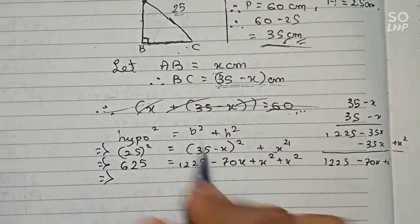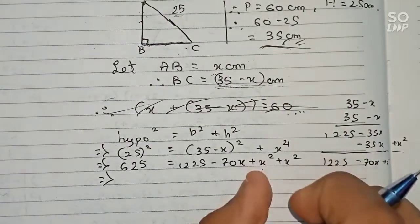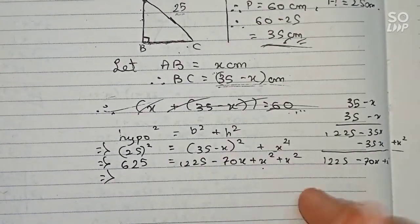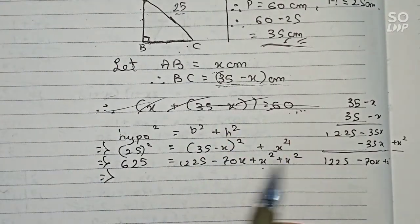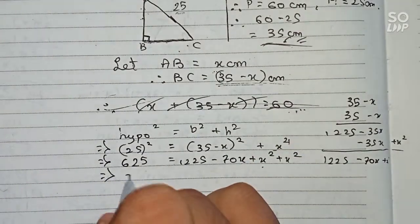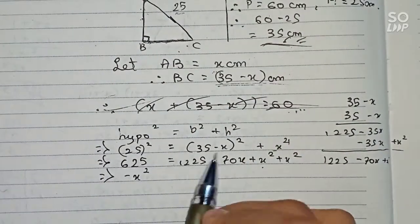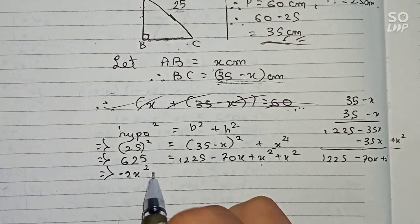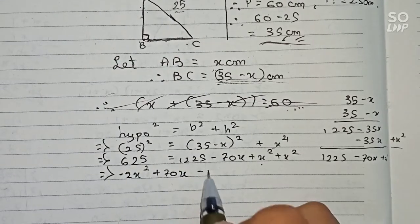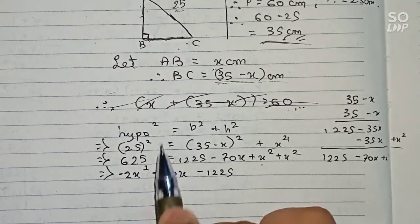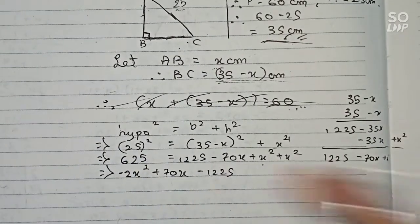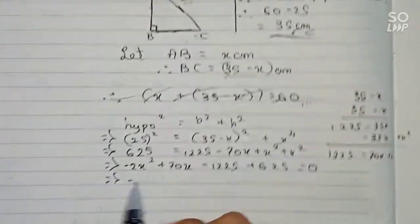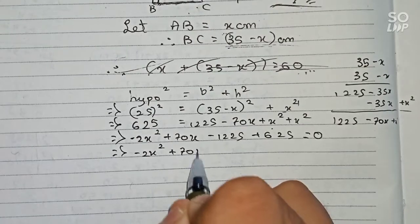Taking all terms to one side: x squared plus x squared gives 2x squared. Rearranging everything to one side, we get minus 2x squared plus 70x minus 1225 plus 625 equals 0, which simplifies to minus 2x squared plus 70x minus 600 equals 0.